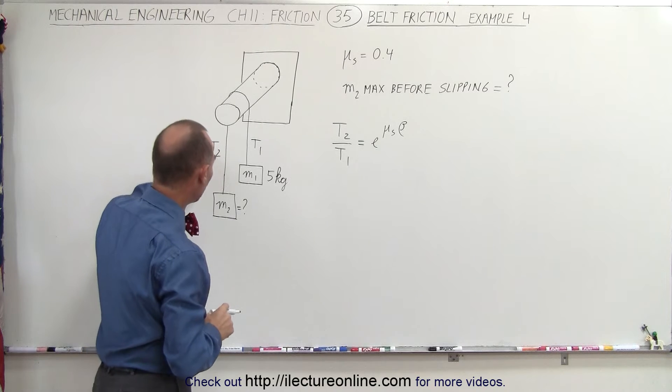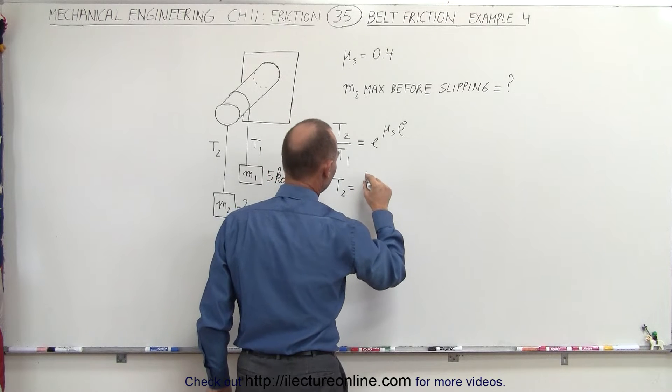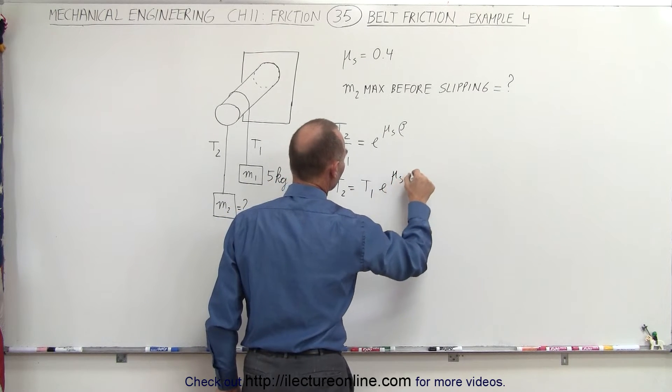Again, since we're looking for t2, we can say that t2 is equal to t1 times e to the mu sub s times beta.